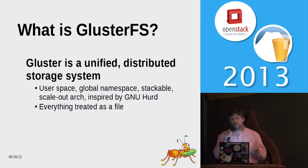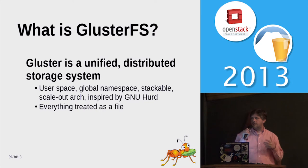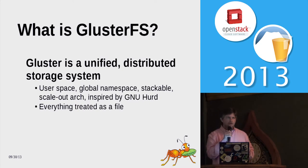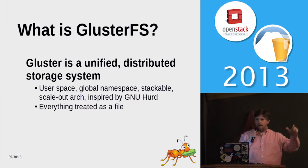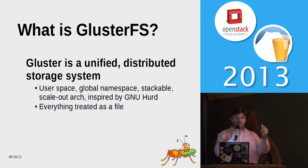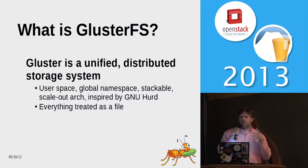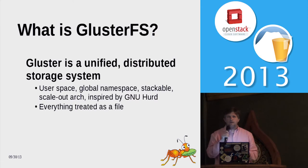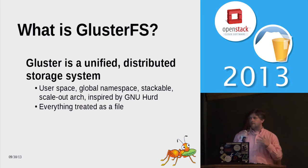GlusterFS at its core is a unified distributed storage system. The word 'unified' there is very specific — as part of a single namespace, we do not have data silos. Whether you're accessing a Gluster volume via the Swift API, an NFS mount, the Gluster client, or the LibGF API client library, you're accessing the same data pool. Many storage systems claim to be unified but really offer a set of data silos you have to manage yourself. We remove the silos entirely.